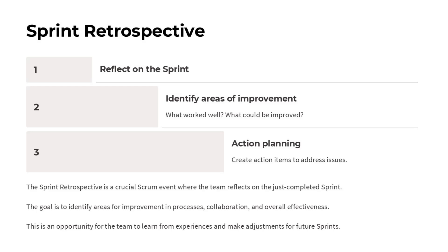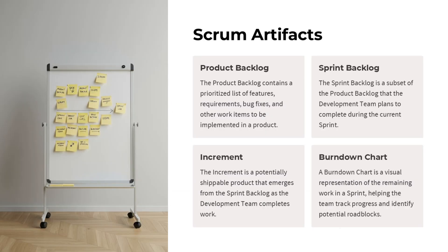The sprint retrospective is a key Scrum event where the team reflects on the previous sprint. The goal is to identify areas for improvement — what worked well and what could be better. This is a chance for the team to learn from their experiences and make adjustments for future sprints. We go through a three-step process: reflect on the sprint, identify areas for improvement, and create action items to address issues. By thoughtfully reviewing the sprint, we can continuously improve our processes and collaboration.